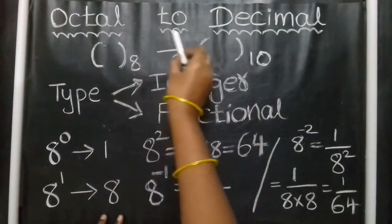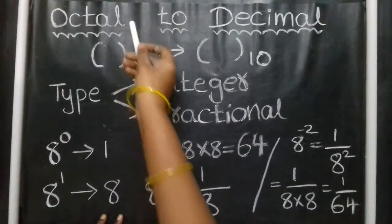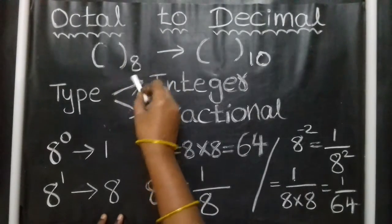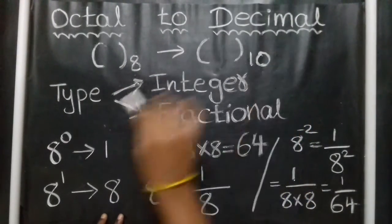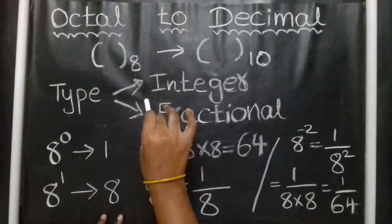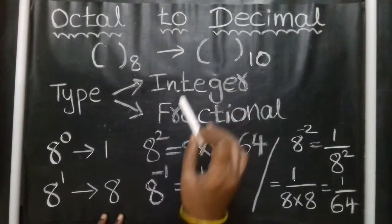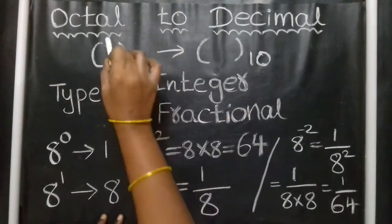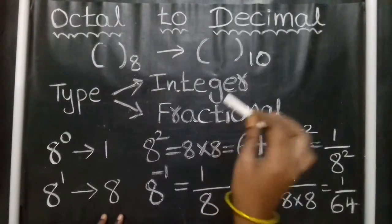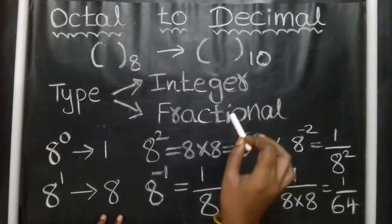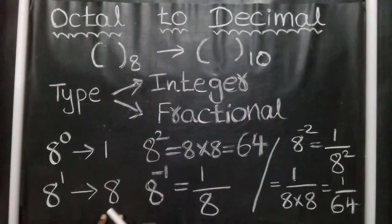Conversion of octal number system to decimal number system. Octal number system is the base 8 system. Decimal number system is the base 10 system. Questions involve either the integer part — that is, point to decimal conversion — or the fractional part. This is octal to decimal conversion.